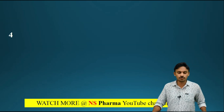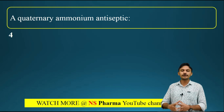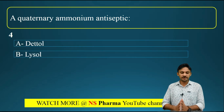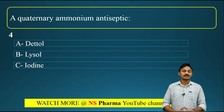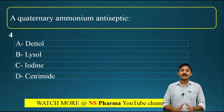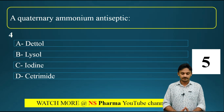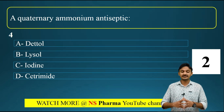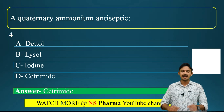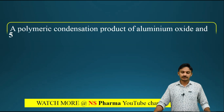Question number four: a quaternary ammonium antiseptic is which of the following? Options are: option A - Dettol, option B - Lysol, option C - iodine, option D - cetrimide. The correct answer is option D - cetrimide. Cetrimide is a quaternary ammonium antiseptic.